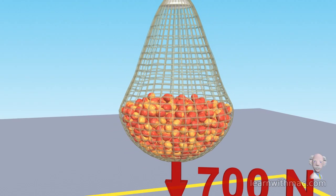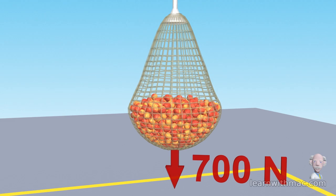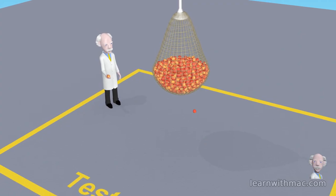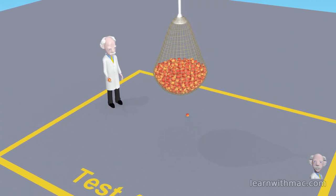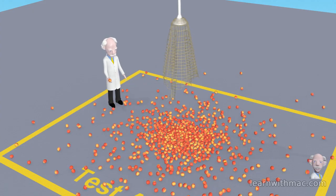Oh dear, the strength of the netting holding the apples wasn't able to support the force of 700 newtons. You should now be able to explain that as a result of this force exceeding the strength of the netting, the netting failed, with the apples falling to the ground.